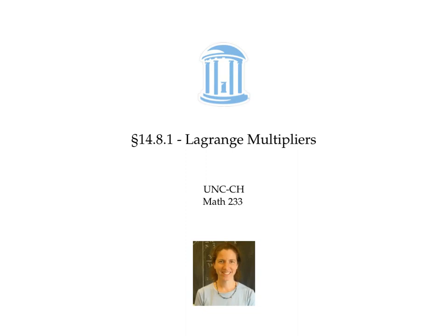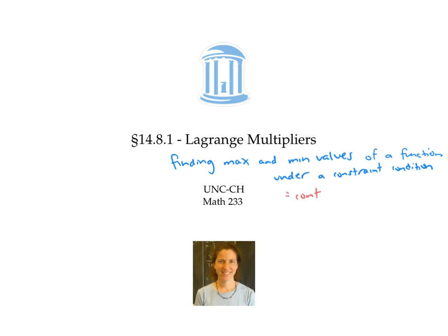Lagrange multipliers are a handy way for finding maximum and minimum values of a function under a constraint condition. Sometimes this is called a method of constrained optimization.